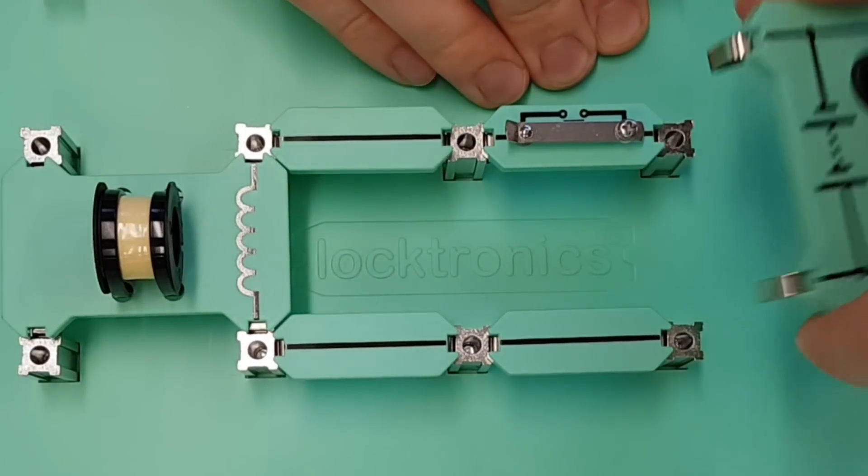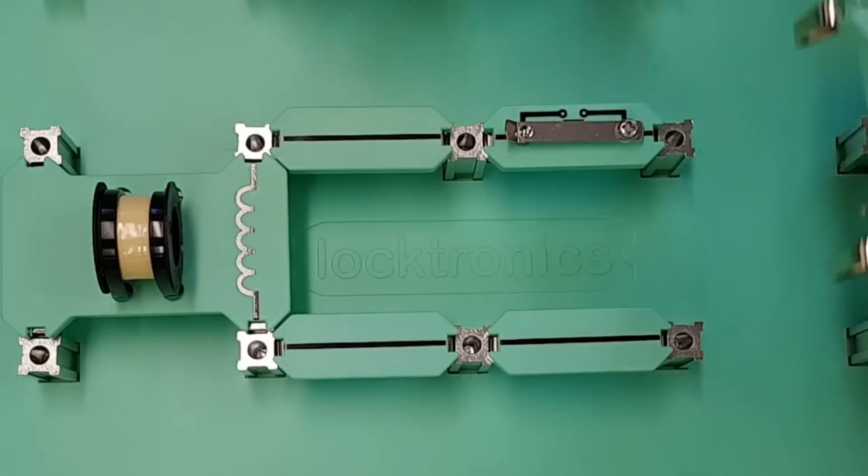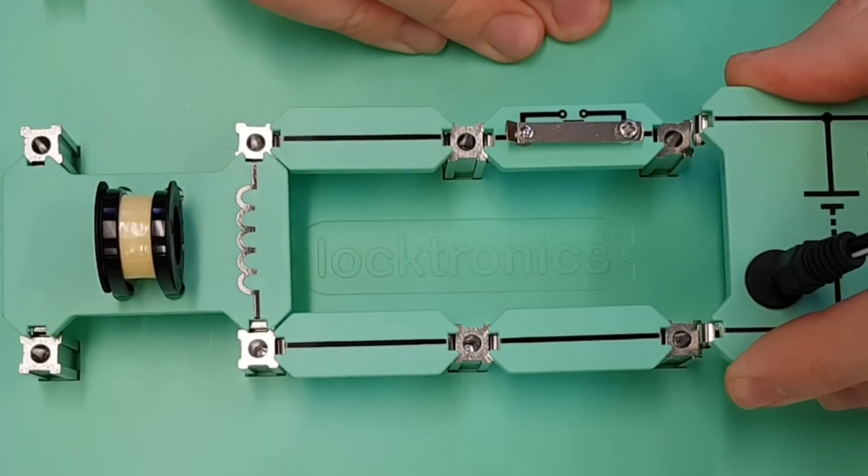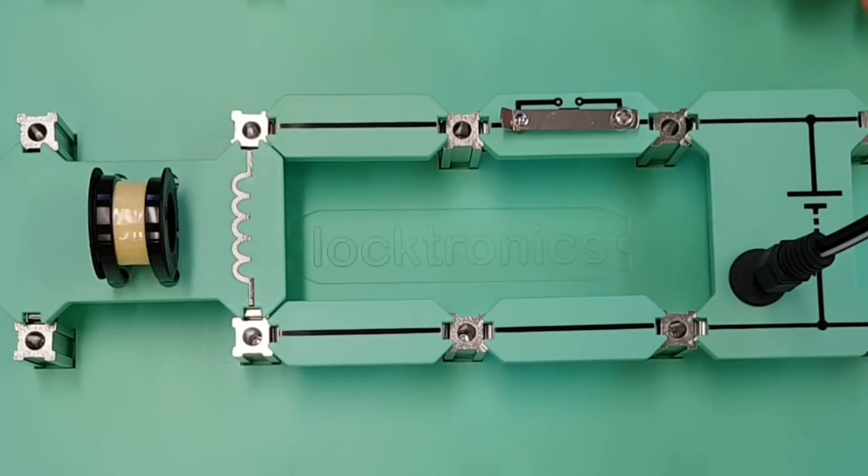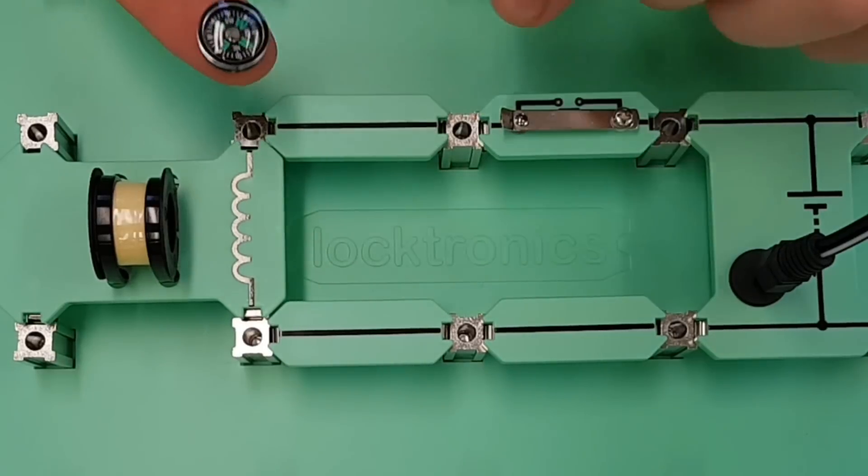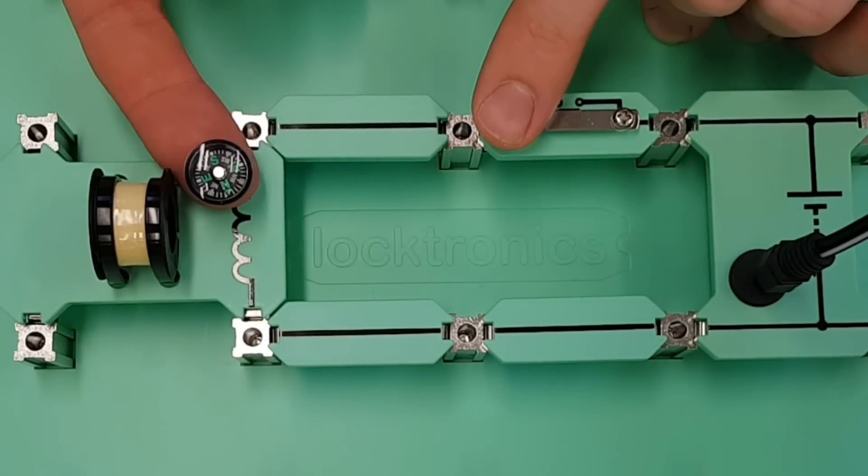If we take this DC supply and we turn it around, what we've now done is we've reversed the direction of current through the circuit. So the current is now flowing in the opposite direction. So let's see what happens now with our magnetic field.